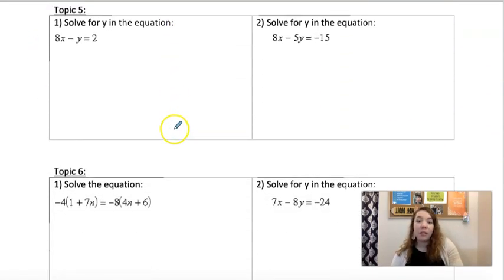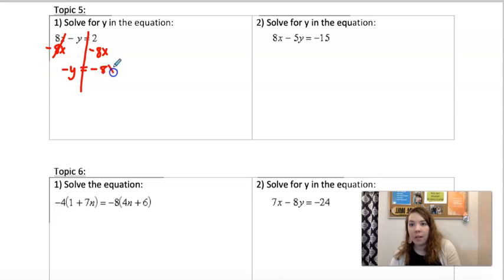All right. Solve for y. So this is literal equation review. We just covered this in algebra this week, actually. So you're solving for y. So we have to move 8x to the other side. Since it's positive, we'll subtract. So negative 8x plus 2. Or you could have 2 minus 8x. That would be the same thing. And then to get rid of this negative, you're going to change every single sign.